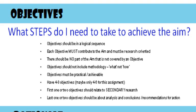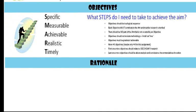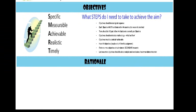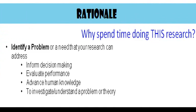So there we have a number of pointers in terms of advice for writing your objectives — the steps that you will take in order to achieve your aim. However, without understanding the purpose it is not quite so useful, so you need to have a reason for doing your research. Why are you spending time doing this research? Why have you chosen this aim? The rationale is the reason for doing the research — in order to justify it, you have to identify either a problem or a need that your research can address.